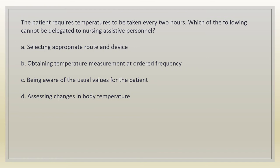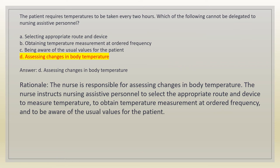The patient requires temperatures to be taken every two hours. Which of the following cannot be delegated to nursing assistive personnel? A. Selecting appropriate route and device. B. Obtaining temperature measurement at ordered frequency. C. Being aware of the usual values for the patient. D. Assessing changes in body temperature. Answer: D. Assessing changes in body temperature. Rationale: the nurse is responsible for assessing changes in body temperature. The nurse instructs nursing assistive personnel to select the appropriate route and device, obtain temperature at ordered frequency, and be aware of usual values.